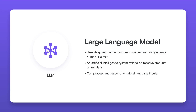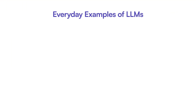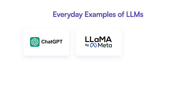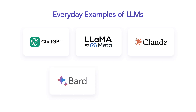Widespread everyday examples of LLMs include ChatGPT from OpenAI, which uses a proprietary large language model; LLAMA from Meta, which is an open-source large language model; Anthropic Claude, which has models to process documents, analyze images, and do other things, and is also a proprietary model; and Bard from Google, containing models to assist in writing, translations, and responding to questions.